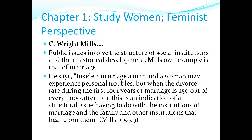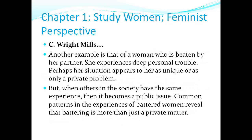Mills' example is that of marriage: inside a marriage a man and a woman may experience personal troubles — but when the divorce rate during the first four years of marriage is 250 out of every 1,000 attempts, it's an indication of a structural issue having to do with the institutions of marriage and the family. It's not just about me and my wife having conflict — other people have the same problem; it may be a structural issue. Another example is a woman beaten by her partner — she experiences deep personal trouble, perhaps seeing it as unique or private. But when others in society experience the same thing, it becomes a public issue.